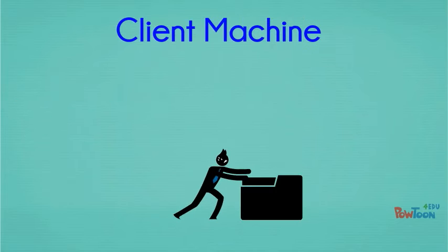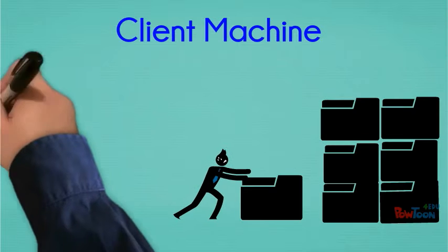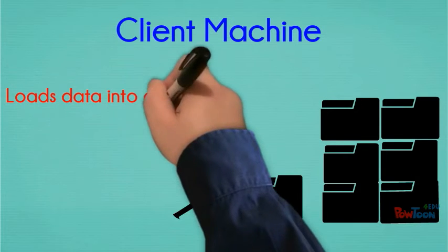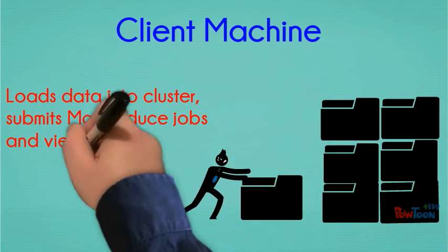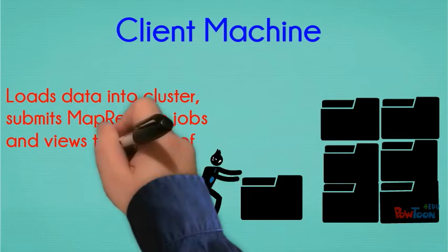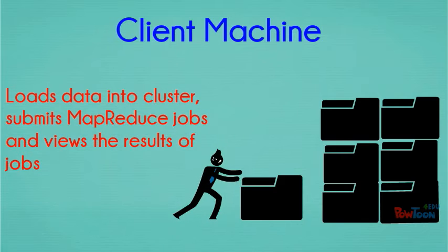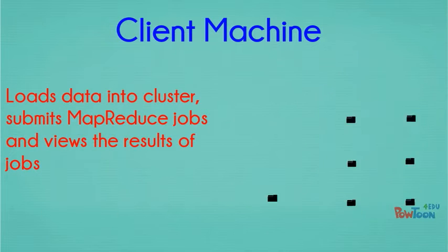A client machine is neither a name node nor a data node and has Hadoop installed on them. They are responsible for loading data onto the cluster, submitting MapReduce jobs, and viewing the results of the jobs once complete.